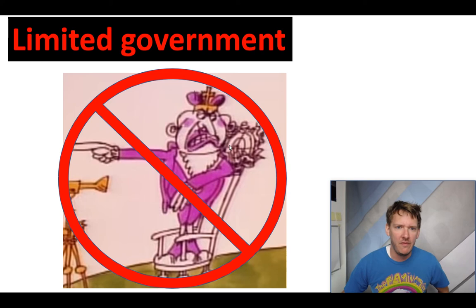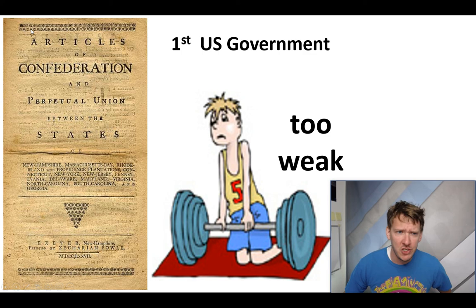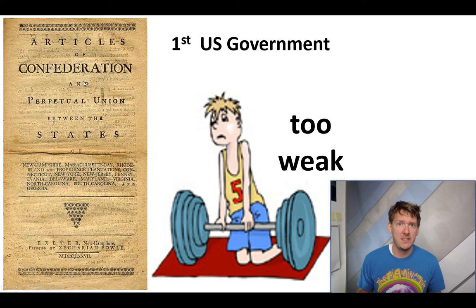So our first government that we will establish is the Articles of Confederation. 'Articles' is just a fancy word for documents that explain the confederation, which basically means a group. So it's a document that explains the group — the group of states — and the documents of our group explain the rules of our group.